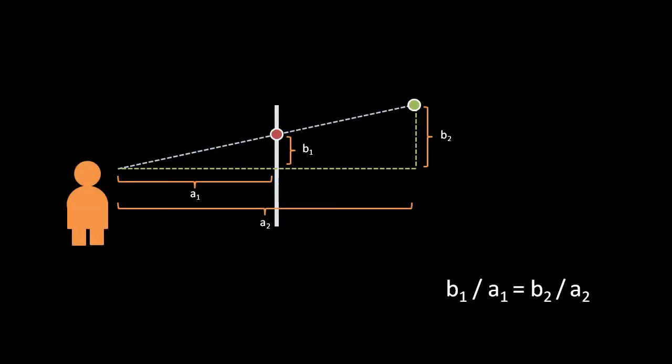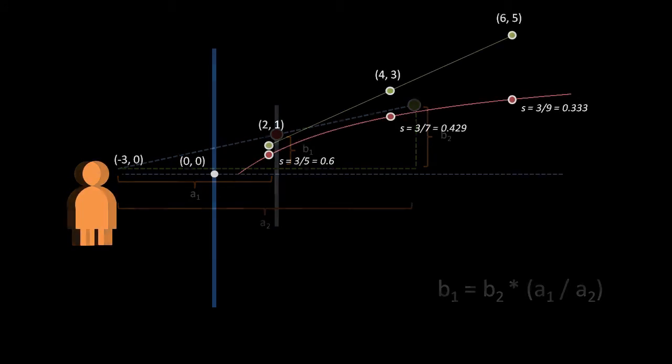Recall the formula for perspective. The ratio between our 3D chord and its Z distance from the camera is equal to the ratio between the perspective-adjusted chord and the viewing plane's Z distance from the camera. So, to get the adjusted chord, we multiply our 3D coordinate by the ratio of A1 over A2 — the ratio between the Z distance to the viewing plane and the Z distance to the 3D coordinate. This ratio we can call the scaling factor, the amount by which we adjust the coordinate.